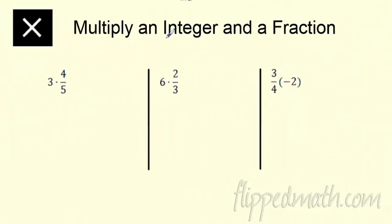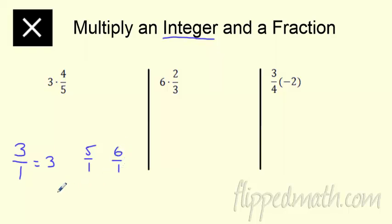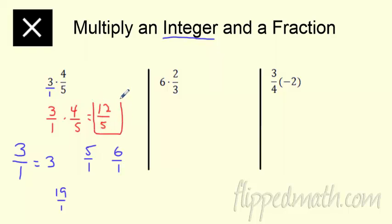Sometimes we have a regular whole number, an integer, and we multiply it by a fraction. Same rules apply. Take three times four fifths — don't worry, every number is a fraction. Three is really three over one. You can think of any number as a fraction: five is five over one, six is six over one, 19 is 19 over one. So I can write this as three over one times four over five. Three times four is 12, five times one is five, so 12 over five. You can make it a mixed number, but I'm really cool with leaving it as an improper fraction.